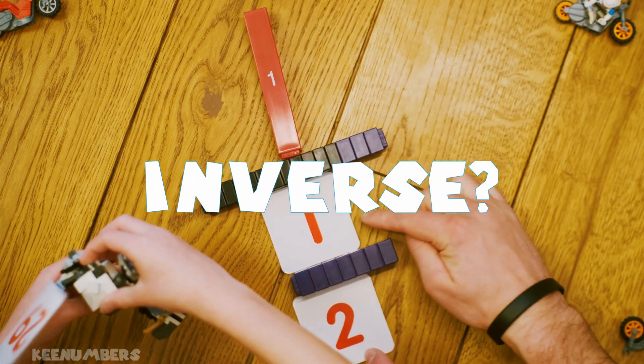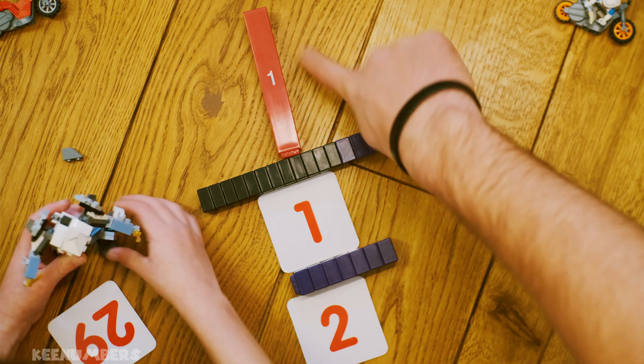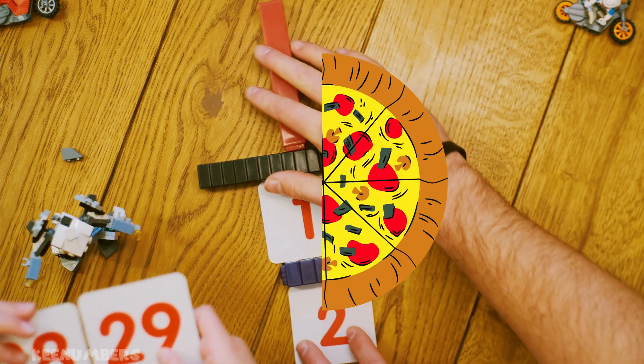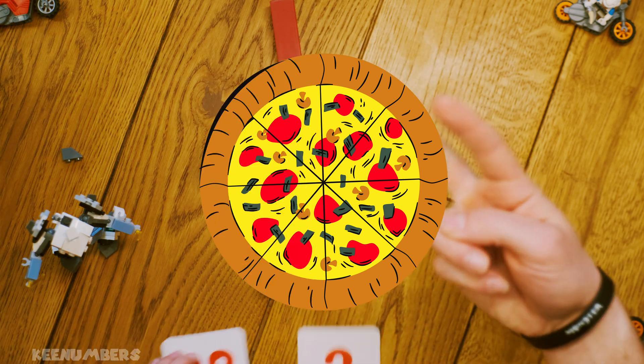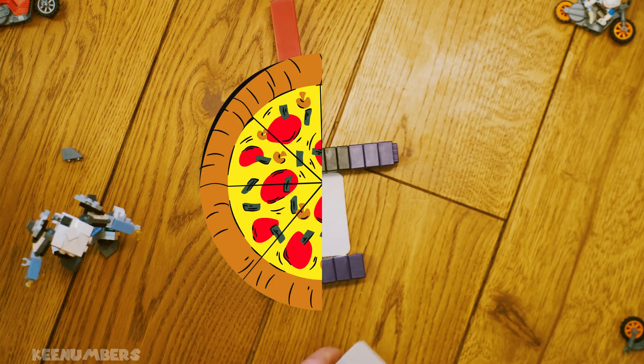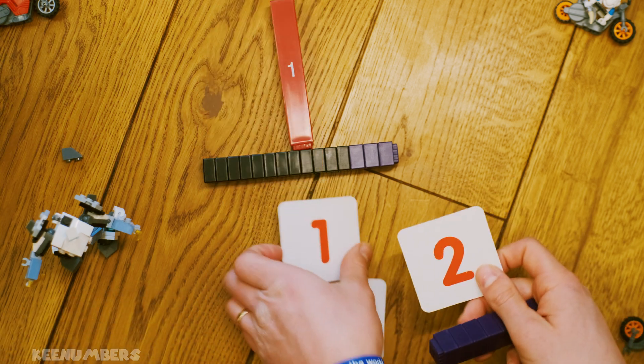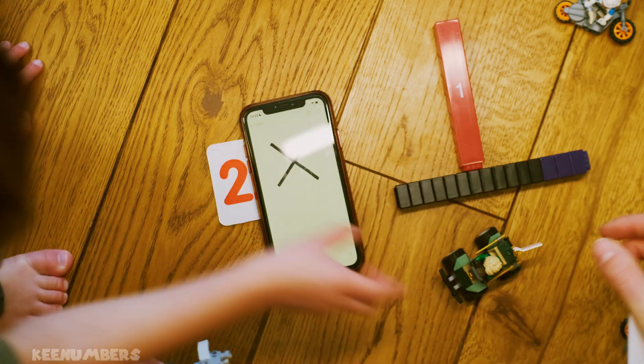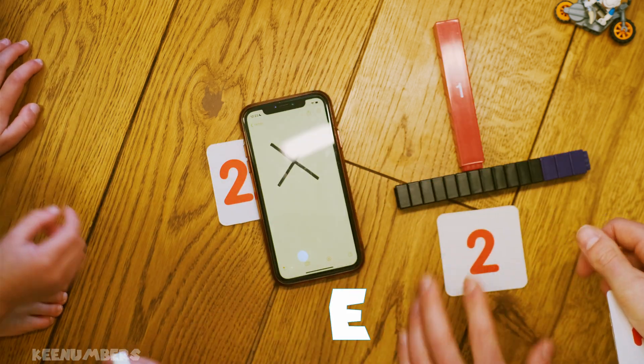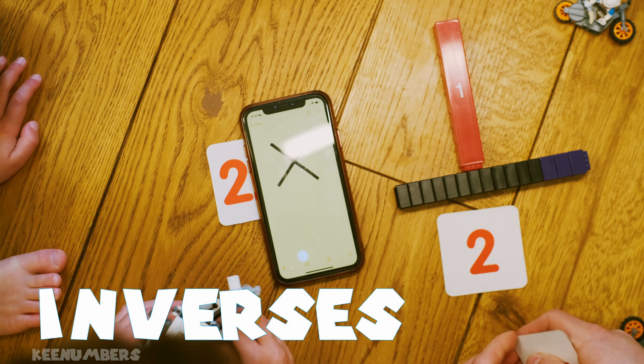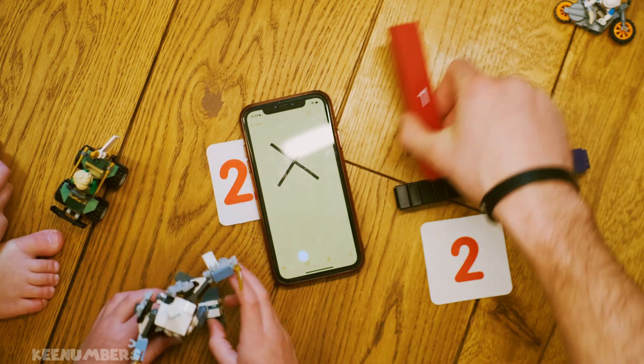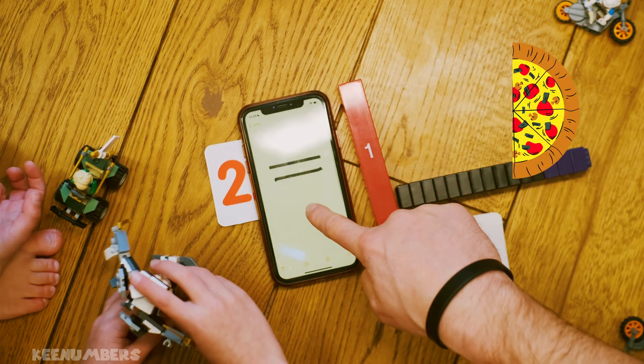One divided by a half. How many halves are in one whole? Think about the pizza. How many halves are in one whole? Two. This is not 28. The saying here is the inverse of one half is two, because two times one half, that's going to get you one. There are two halves in one.